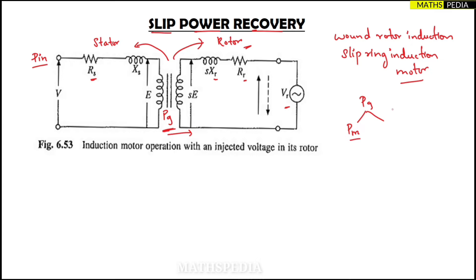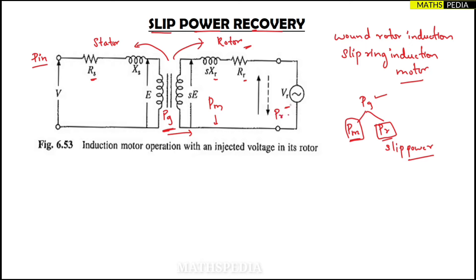The air gap power PG can be converted into two things: one part is converted into mechanical power PM, and the other part that is not converted into mechanical power is called PR, which is the slip power. So PG splits into mechanical power PM and slip power PR.